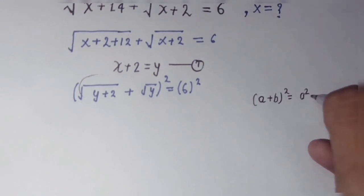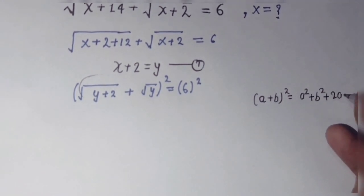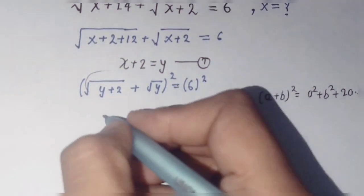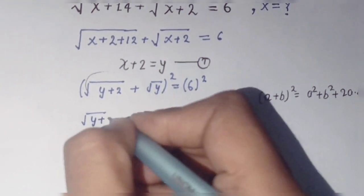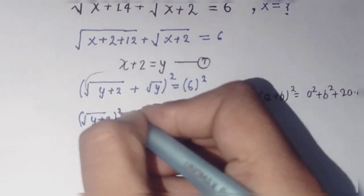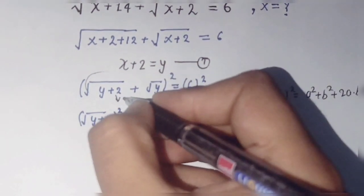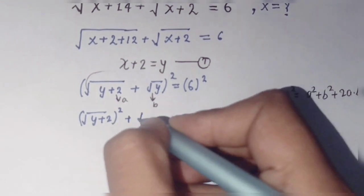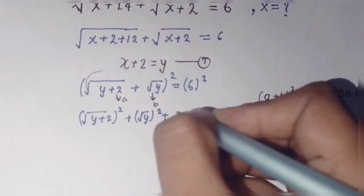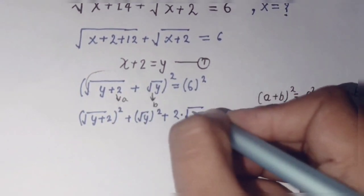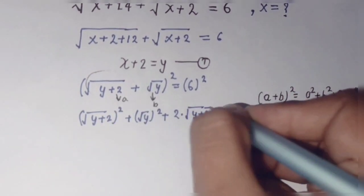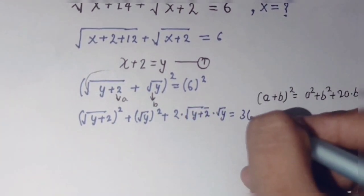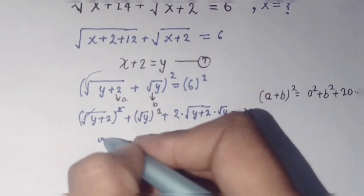We use the identity (a + b)² = a² + b² + 2ab. Here a = square root of (y + 2) and b = square root of y. So we get: a² + b² + 2ab, which gives (y + 2) + y + 2·square root of (y + 2)·square root of y equals 36.